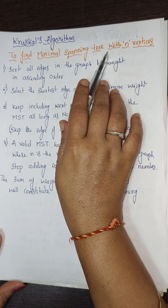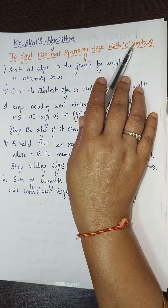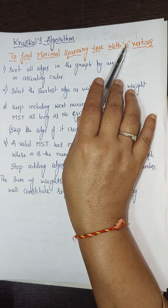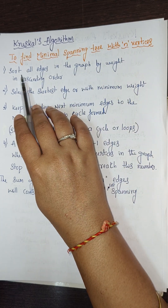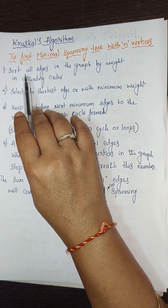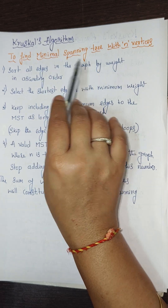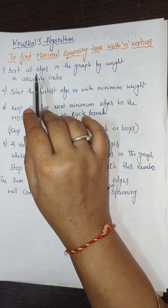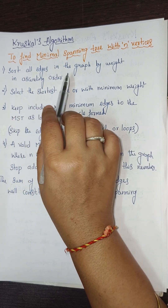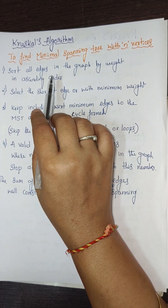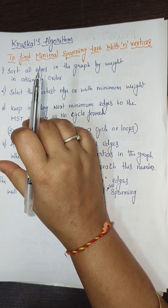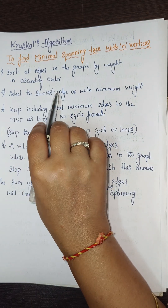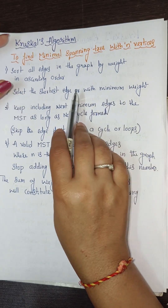Now let's see the steps to find the minimum spanning tree with n vertices. Step 1: Sort all the edges of the graph by weight in ascending order. The weights are given and you must list the edges in ascending order of weight.